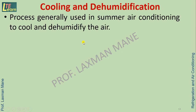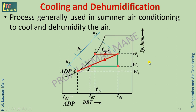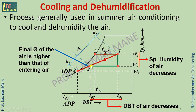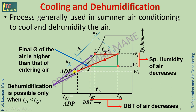Cooling and dehumidification is a process generally used in summer air conditioning to cool and dehumidify the air. The process is shown as line 1 to 2 on the psychrometric chart, where Td4 is the coil temperature. Dry bulb temperature decreases from Td1 to Td2, and specific humidity decreases from W1 to W2. The final relative humidity of the air is higher than that of the entering air. Dehumidification is possible only when Td4 (coil temperature) is less than Tdp1 (dew point temperature of entering air).